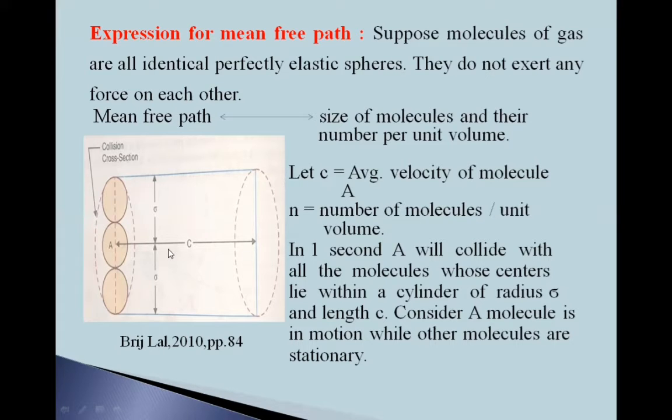Now let c equal the average velocity of molecule A, and n is number of molecules per unit volume. Now, for instance, in one second, this A molecule will collide with all molecules whose centers lie within a cylinder of radius sigma and length c.